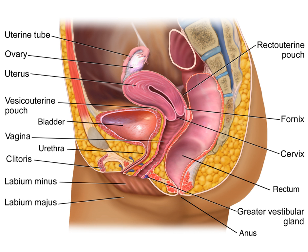The female reproductive system includes the structures involved in ovulation, fertilization, development of an embryo, and birth. These structures include the ovaries, oviducts, uterus, vagina, and mammary glands. Estrogen is one of the sexual reproductive hormones that aids in the sexual reproductive system of the female.